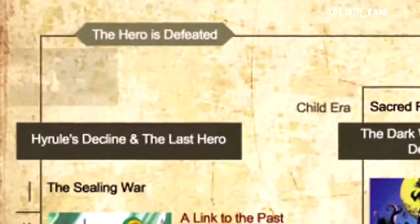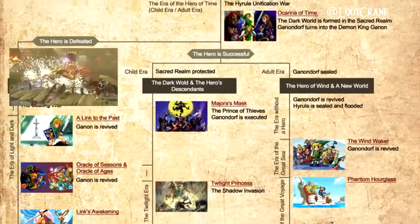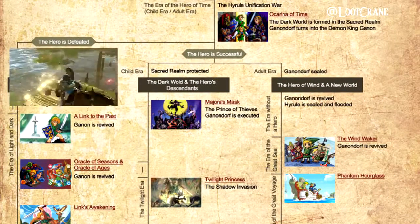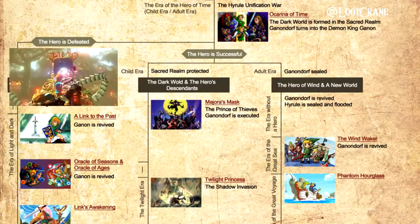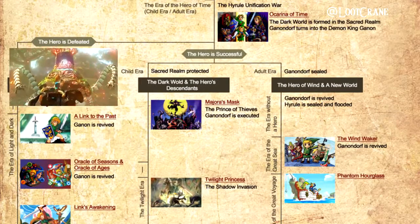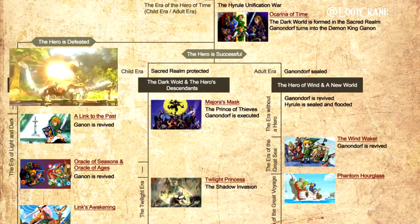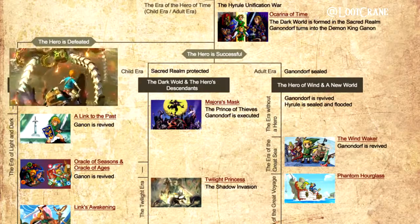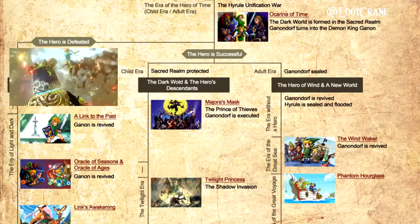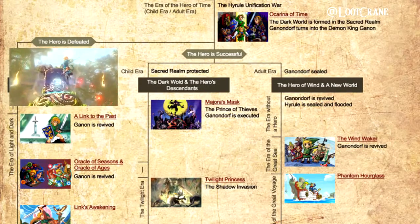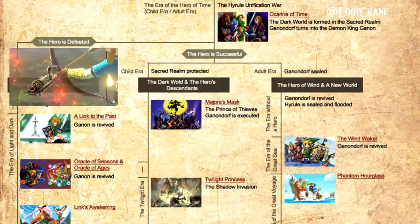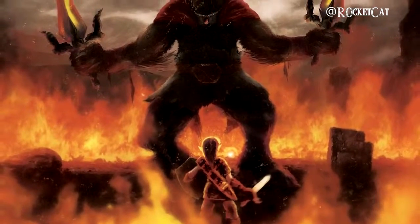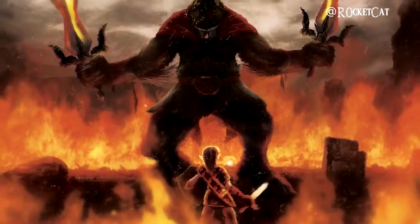The Legend of Zelda for Wii U is to be placed near the end of the Imprisoning War, which is spoken of in A Link to the Past, with Link being the last breath of hope for Hyrule. Not only would it be the first 3D Zelda game in the Downfall timeline, but the first game in its timeline as well. The evidence for this theory has been right in front of us the entire time.